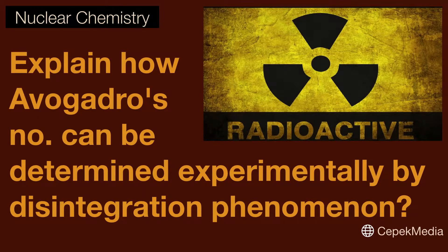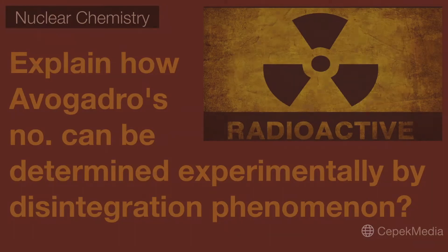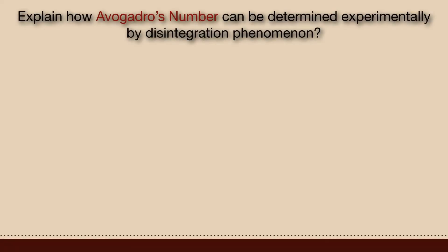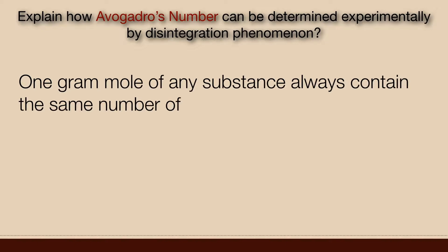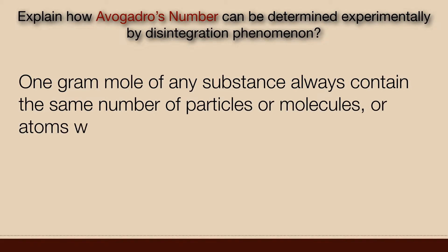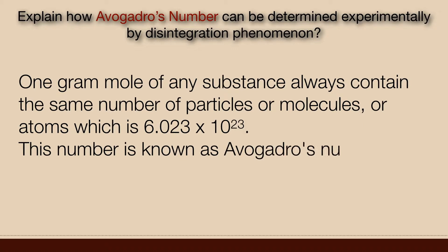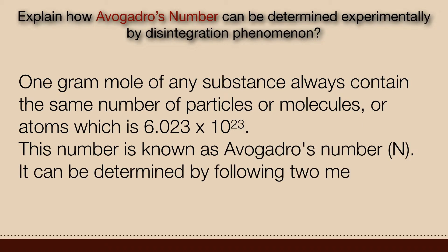Explain how Avogadro's number can be determined experimentally by disintegration phenomena. One gram mole of any substance always contains the same number of particles, molecules, or atoms, which is 6.023 × 10²³. This number is known as Avogadro's number. It can be determined by the following two methods.